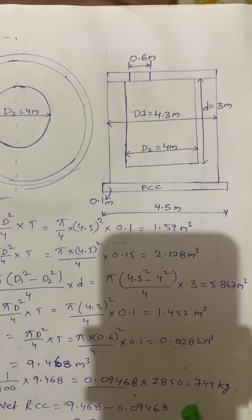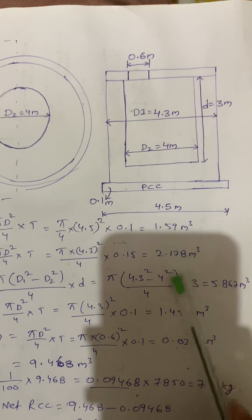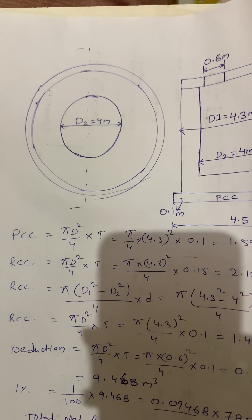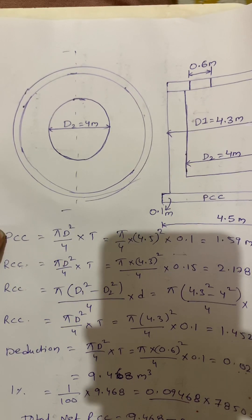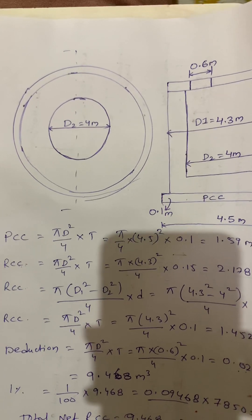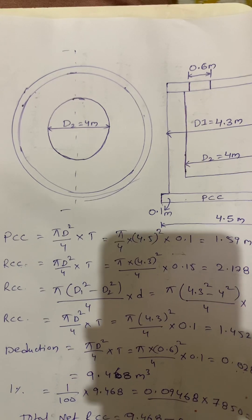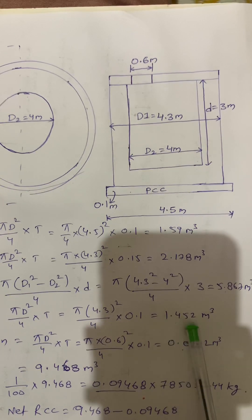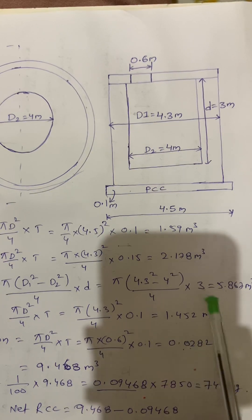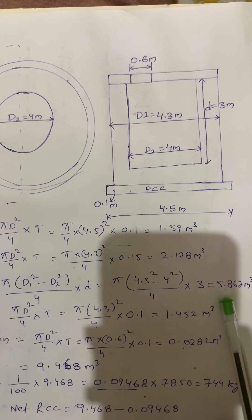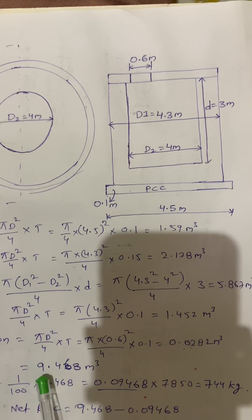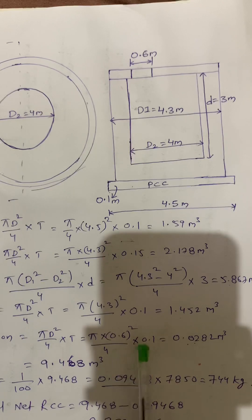Now we find the total RCC quantity. Do not add the PCC value because PCC and RCC have different mix ratios. The total RCC is: 2.178 (wall solid) + 5.867 (hollow wall) + 1.452 (slab) − 0.0282 (hole deduction). So total RCC equals 9.468 meter cube.